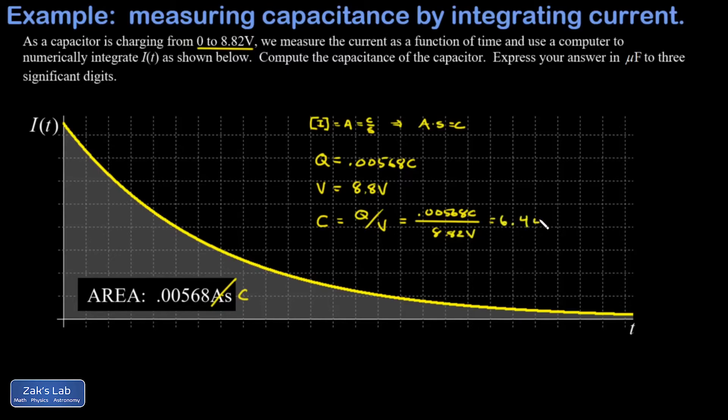I get 6.44 times 10 to the negative fourth farads. I'm asked to express this answer in microfarads to three significant digits. I'll divide the power of 10 by 10 squared or 100, and multiply the number out in front by 10 squared, just manipulating the scientific notation. I end up with 644 times 10 to the negative 6 farads - that's a microfarad.